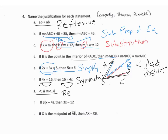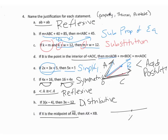Letter H uses the distributive property. And if X is the midpoint of AB, then AX equals XB — that is by the definition of midpoint. Knowing these properties — reflexive, substitution, transitive — will really help you when we do proofs.